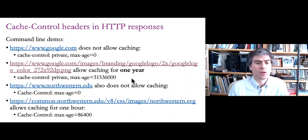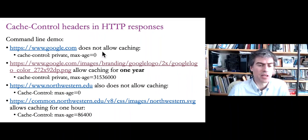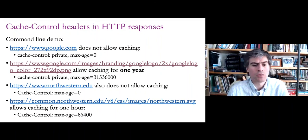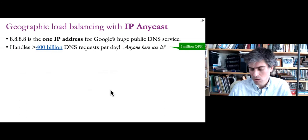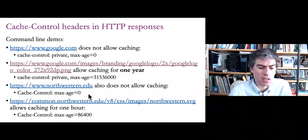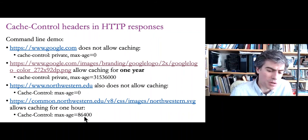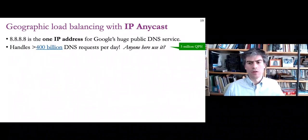Obviously caching a logo makes more sense than caching the homepage, which changes every day. Google sometimes has new doodles and promotions on the homepage, so users want the most up-to-date version. The logo is unlikely to change, so Google allows it to stay the same for up to one year in a cache. Northwestern's logo allows caching for up to one day — 86,400 seconds is 24 hours.